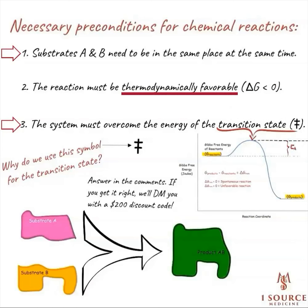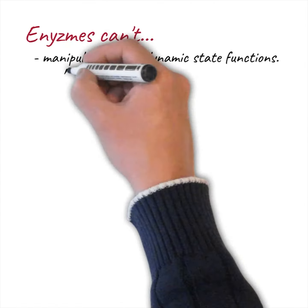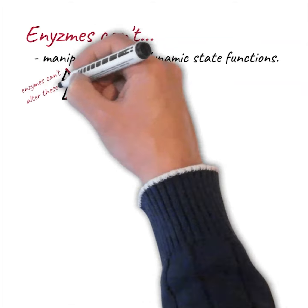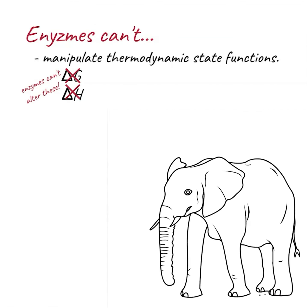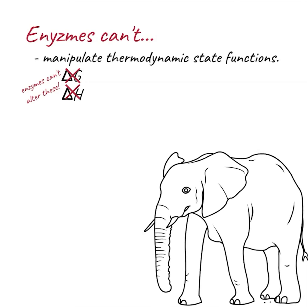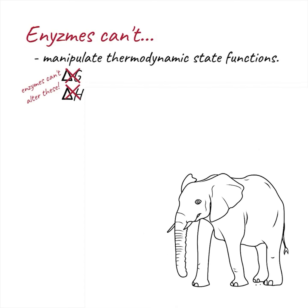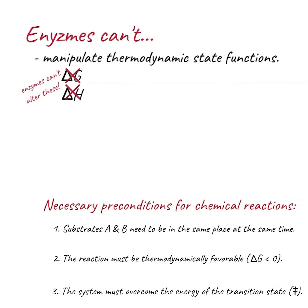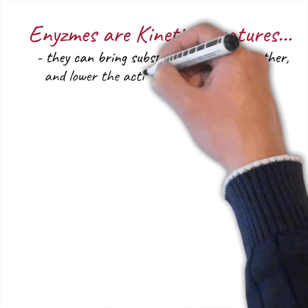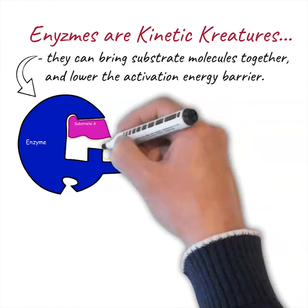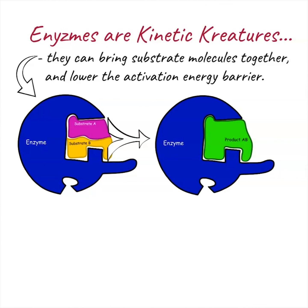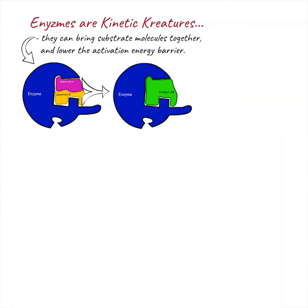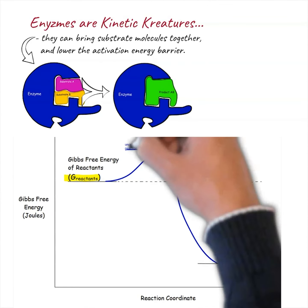But why do we care? What does this have to do with enzymes anyway? As you'll learn in our series dedicated to thermodynamics, state functions such as enthalpy and Gibbs free energy are fundamental properties of their respective molecules, which cannot be manipulated by enzymes. So that brings us to the elephant in the room. In reality, enzymes are exclusively kinetic creatures. This means they are amazing at bringing substrate molecules together to occupy the same space at the same time, and while they lack the ability to redefine delta G between reactants and products, they are wizards when it comes to lowering the energy barrier imposed by the transition state.